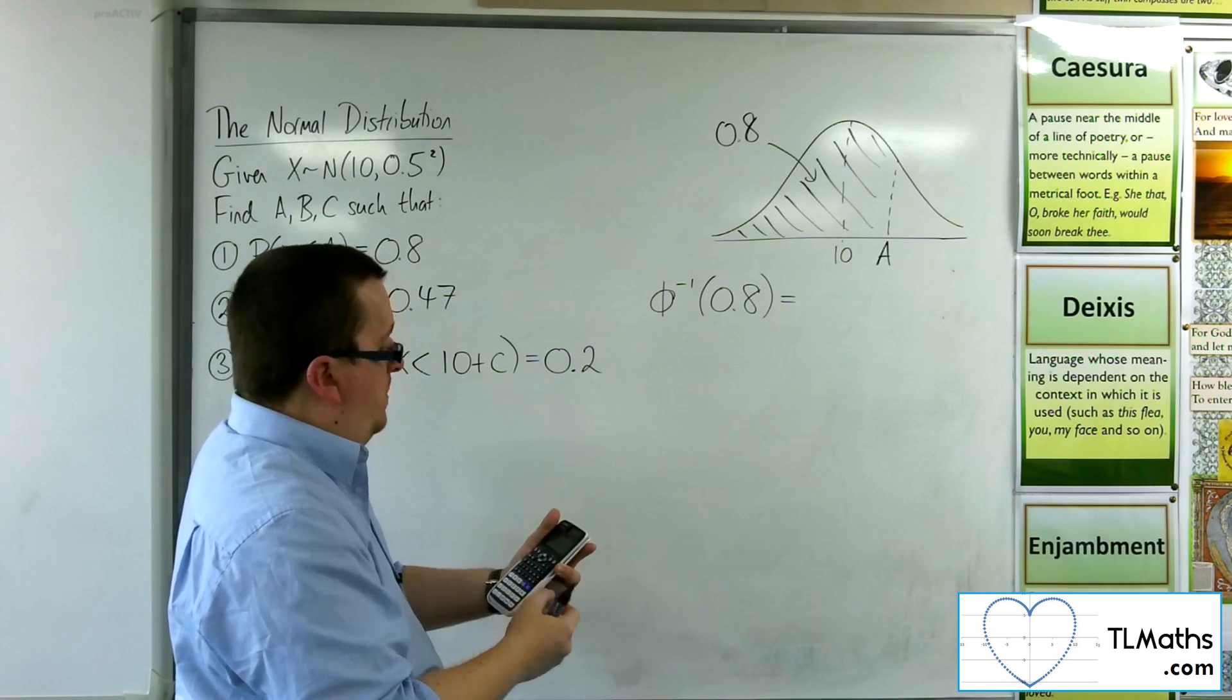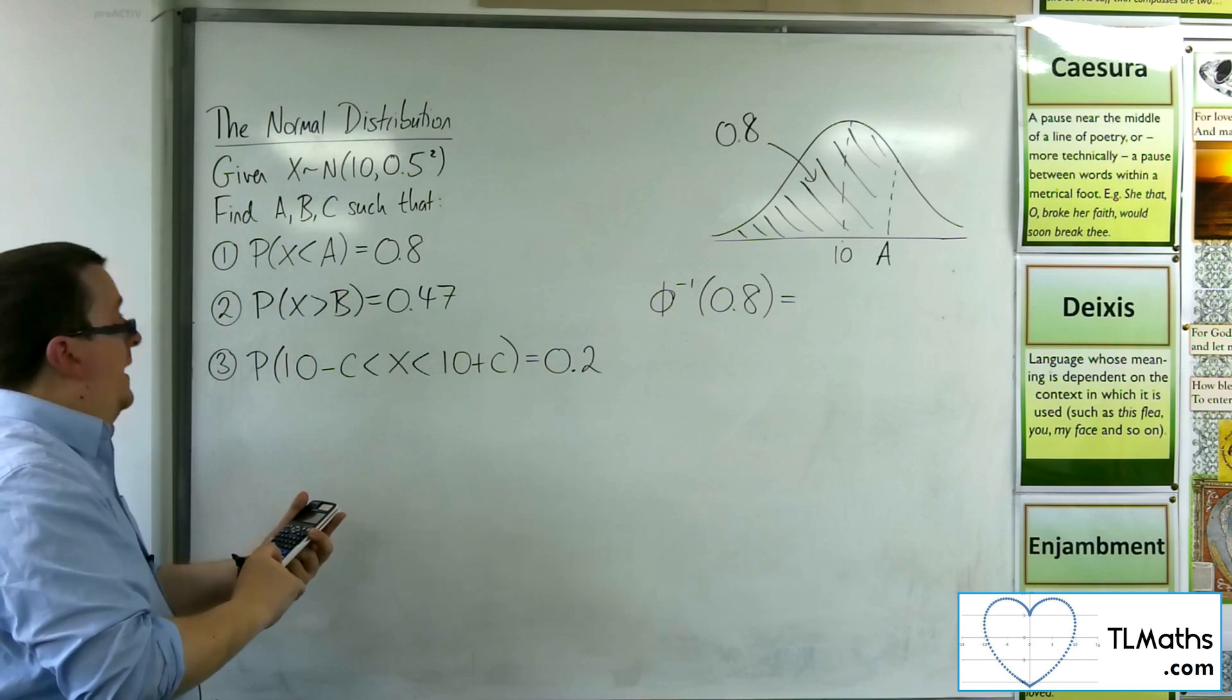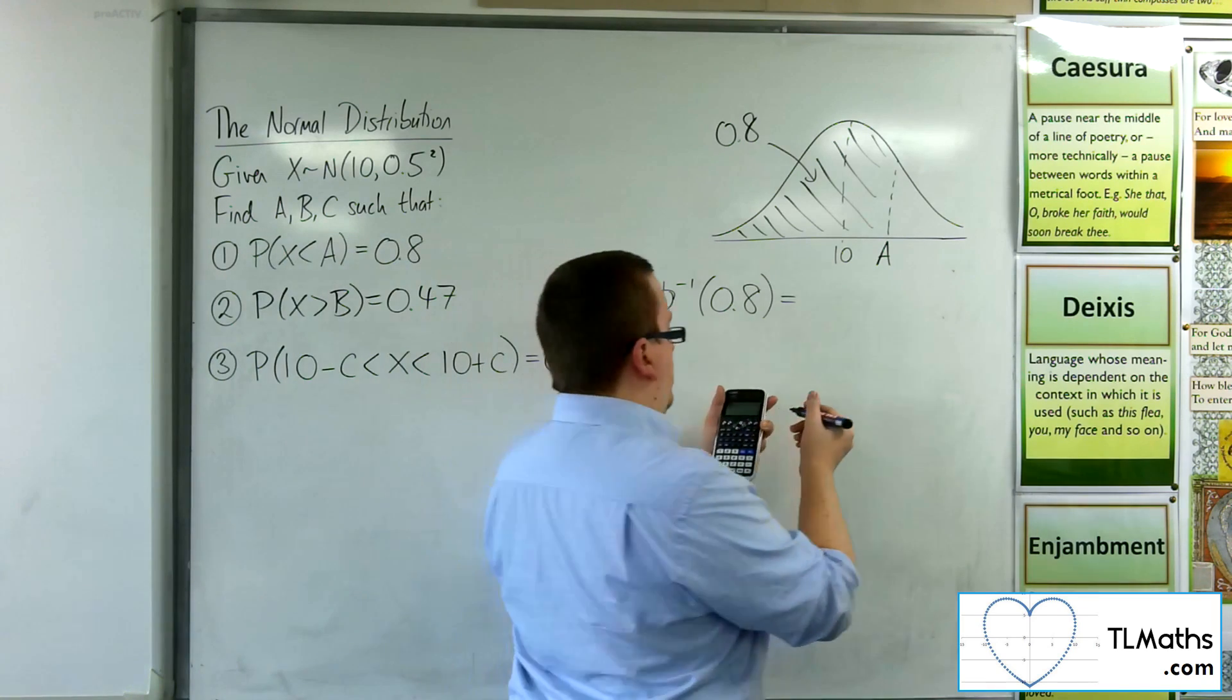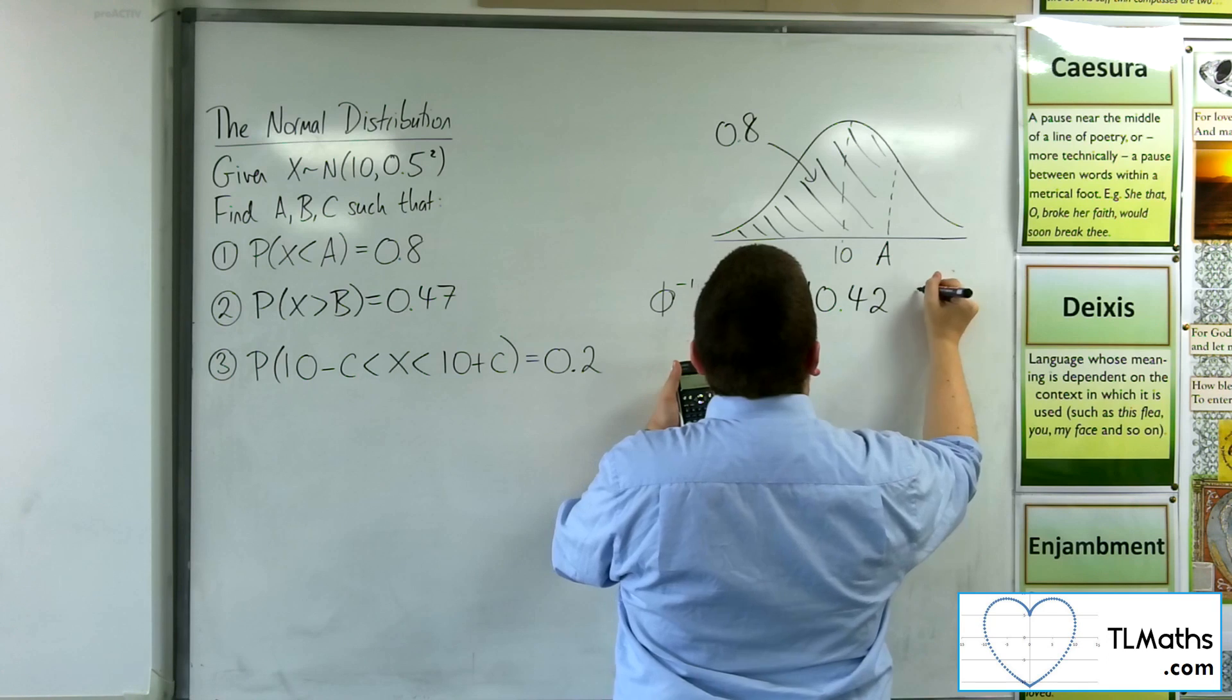We could also type in the sigma, the standard deviation, 0.5. And the mean is 10. And we get 10.42 to two decimal places.